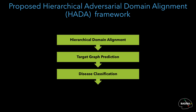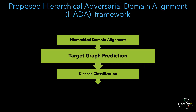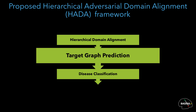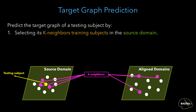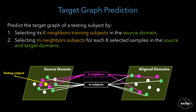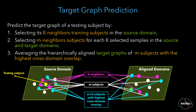Following domain alignment, we predict the target graph of a testing subject using the hierarchically aligned domains. We propose to select for a testing subject a local neighborhood where only its K nearest neighbors are identified in the source domain. Next, we find their corresponding graphs in the target domain. Within the set of neighbors, we further select the M neighbors which share the highest cross-domain overlap, meaning they have the most shared local neighborhood between aligned source and target domains. Finally, we average their corresponding target graphs in the hierarchically aligned domain.